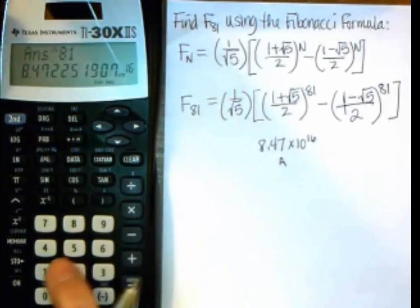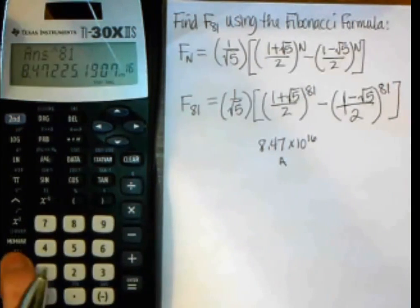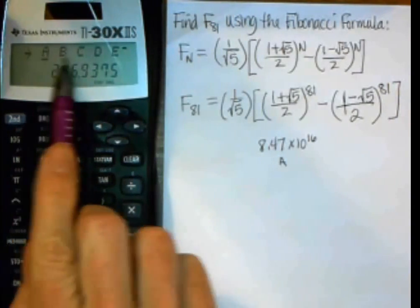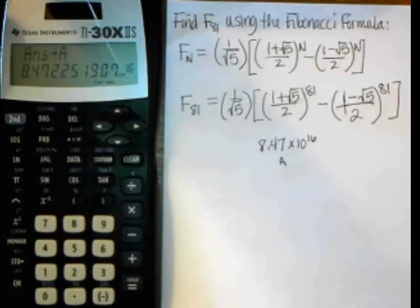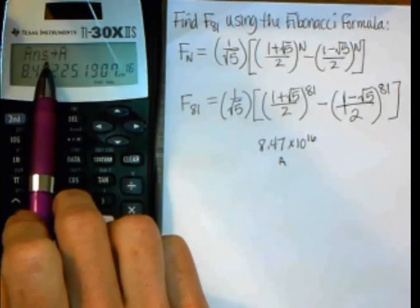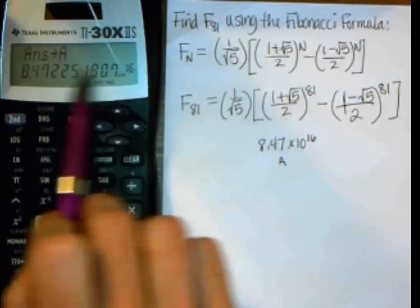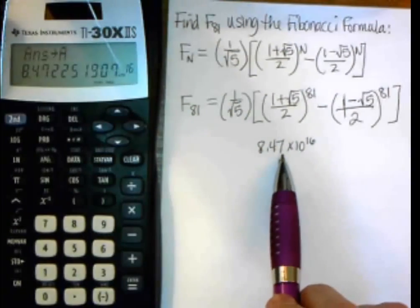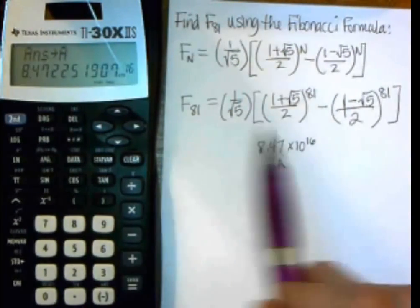So to do a store, you push this store button here. And it gives me a choice: A, B, C, D, or E. I'm going to use A, so I just push equals. And now it's telling me I stored that number in A, and here's the value of it. And that matches what I wrote down, so I'm good to go. So now I have that stored.